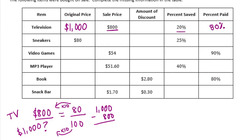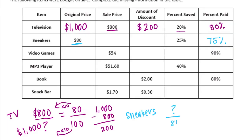For the sneakers: the original price is $80 and the percent saved is 25%, which means the percent paid is 75%. We know the original price was $80 but we don't know the sale price.